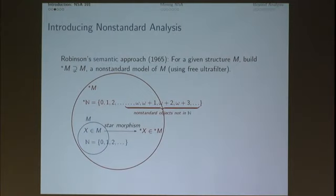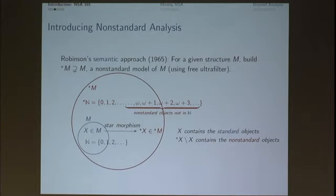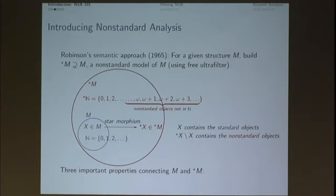In general, there is what is called a star morphism, which you build using the free ultra-filter, which takes any set X in M and blows it up to star X in star M. Unless it's finite, it will be much bigger. X contains the standard objects; star X minus X contains the non-standard objects. And all this is particularly useless — non-standard models were already known to Skolem, and you can't really do anything with them alone. What makes non-standard analysis tick, Robinson's genius contribution, is how M and star M are related.